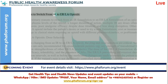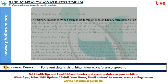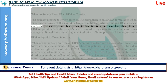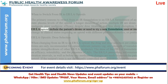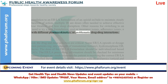When to switch from IR to ER-LA opioids: the primary reasons to switch from an IR formulation to an ER-LA formulation include maintaining steady-state plasma levels of the opioid, a longer duration of action, multiple IR doses often needed to achieve effective analgesia, poor analgesic efficacy despite dose titration, and less sleep disruption. Other reasons for switching to an ER-LA opioid include the patient's desire or need to try a new formulation, cost or insurance issues, adherence issues, a change in clinical status requiring an opioid with different pharmacokinetics, or problematic drug-drug interactions.